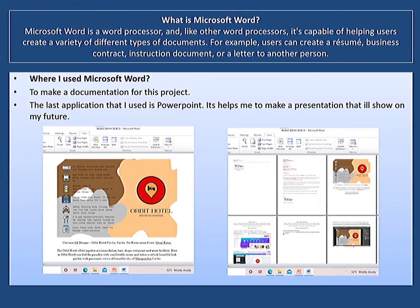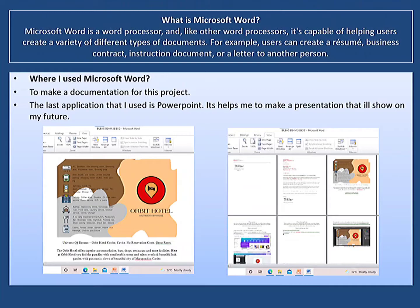What is Microsoft Word? Microsoft Word is a word processor and, like other word processors, it is capable of helping users create a variety of different types of documents. For example, users can create a resume, business contract, instruction document, or a letter to another person. Where I use Microsoft Word: I used it to make documentation for this project.